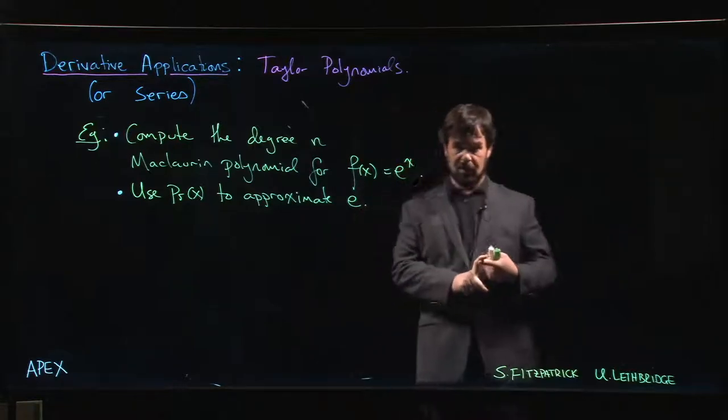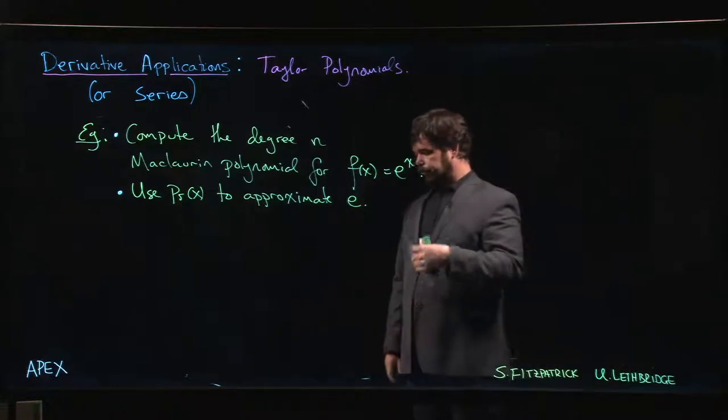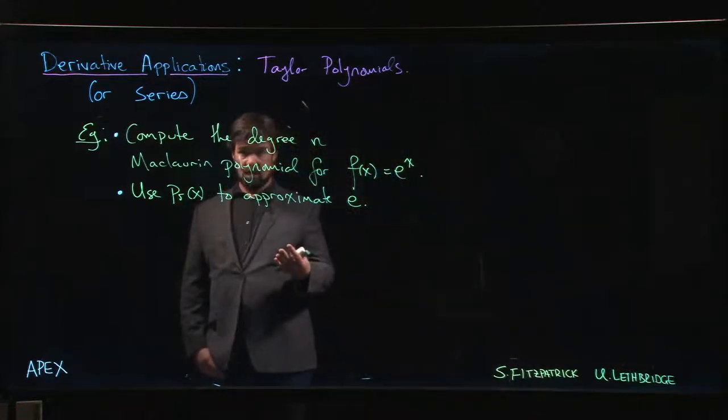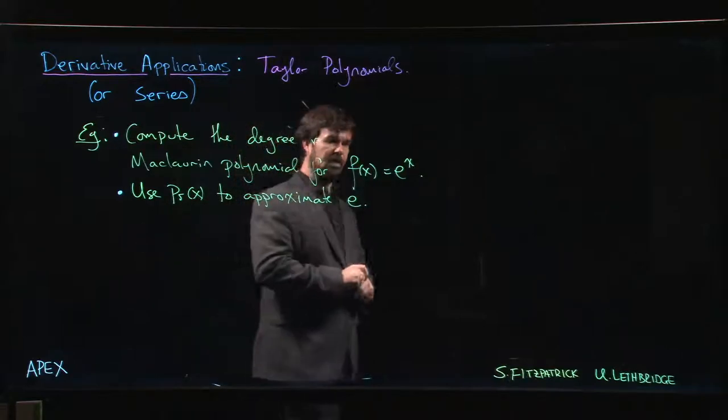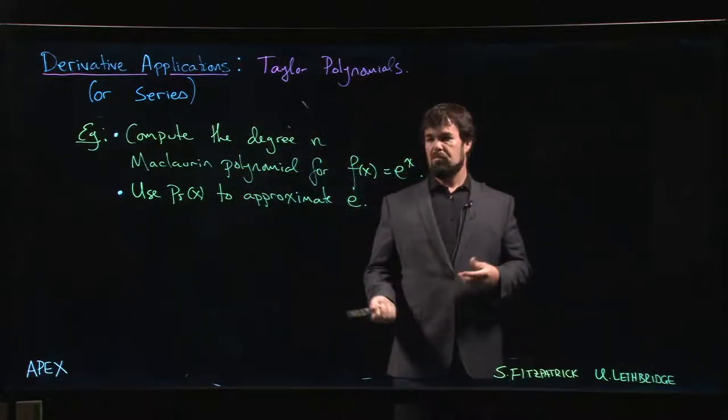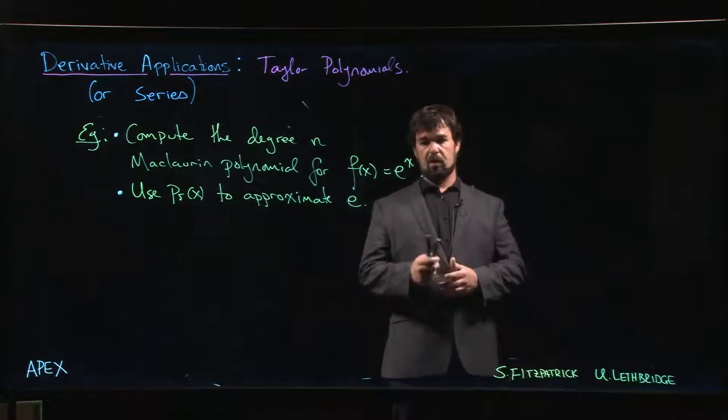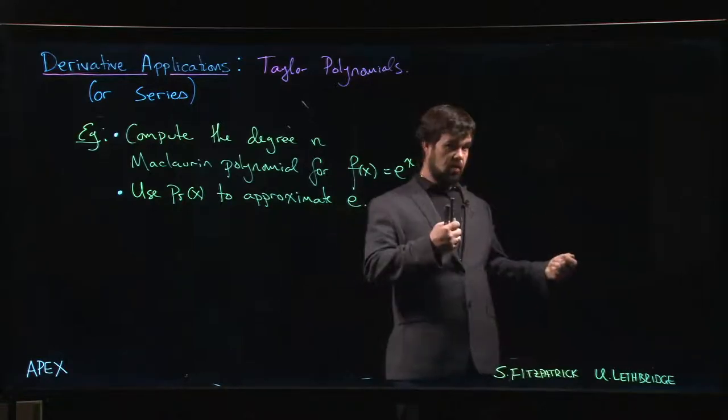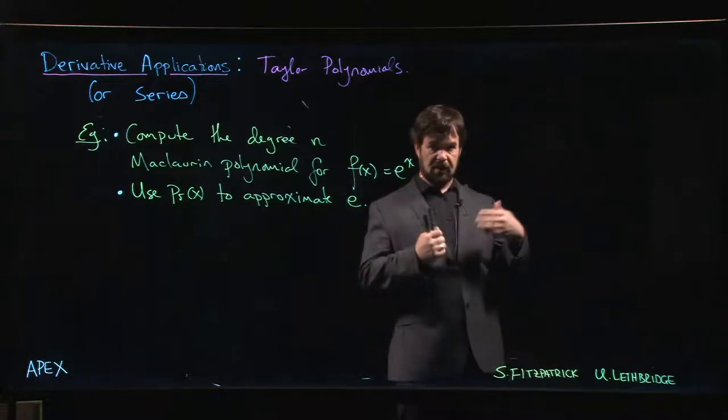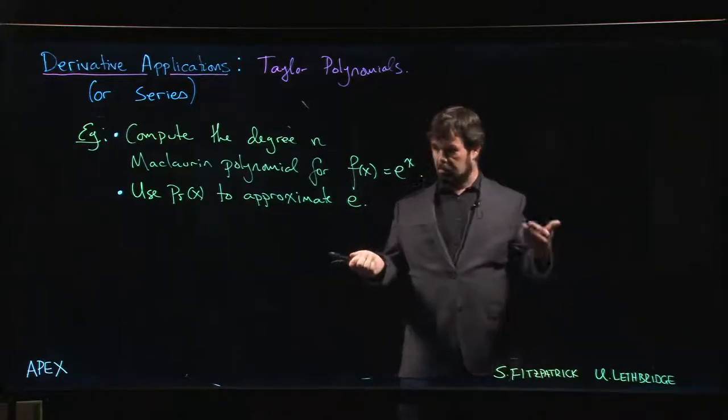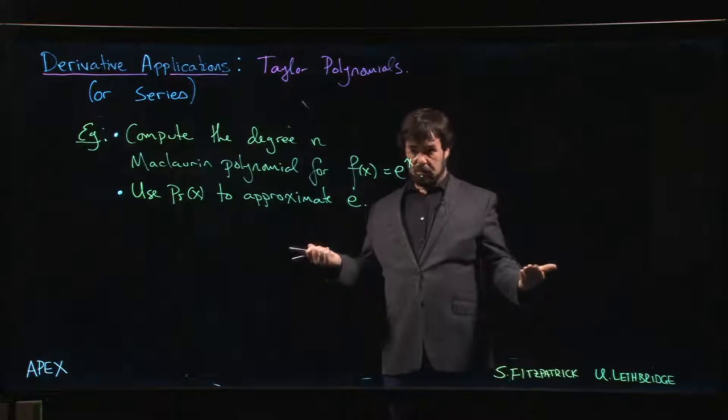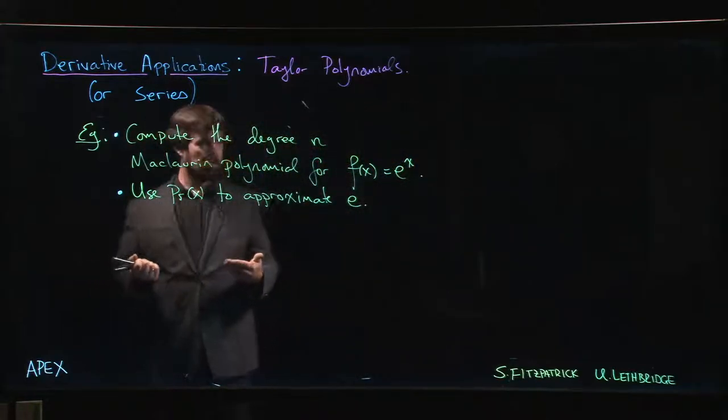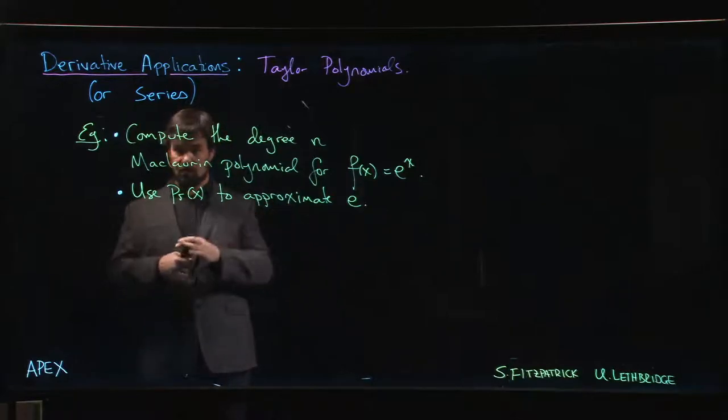How did people figure this out before they had calculators and computers? People have been working with exponential functions for a very long time. Back in the day, instead of calculators, what people had were huge books full of tables of values. If you wanted to know the value of e at 1.6, you could go through the book, look it up in the table, and you would get the value. This is what you had to do.